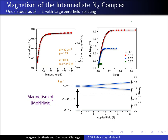The two unpaired electrons in the purple bridging N2 complex intermediate give rise to interesting magnetic properties that we've been able to study as a function of temperature and magnetic field, allowing us to assign an S = 1 ground state to that bridging N2 complex intermediate — a triplet state with those two unpaired electrons.